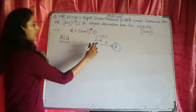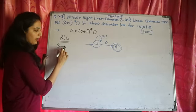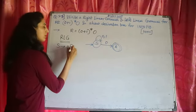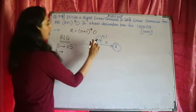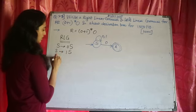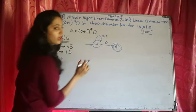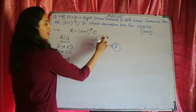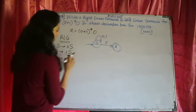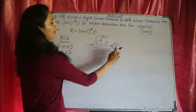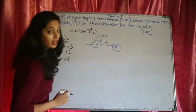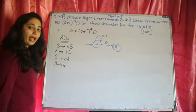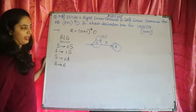For the right linear grammar, starting with the first state S: on 0 it goes to S, so the production rule is S → 0S. The next production rule is S → 1S. The next production rule is S → 0A. So here we have 3 production rules. The final state is A, and for the final state we always write the rule: A → epsilon. With this, we are done with the right linear grammar.